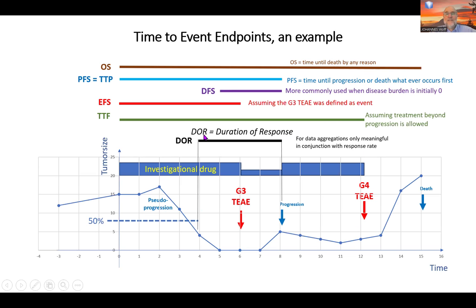Finally, there is duration of response. This is nowadays used very often, particularly in single-arm phase two studies. It ends with progression, similar to PFS, TTP, and disease-free survival, but it has a different starting point: the starting point is the response itself. Therefore, it only counts for patients who actually have a response — and that is the weakness of this measure. Duration of response is not meaningful unless you also know the response rate; together, the two add information.